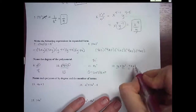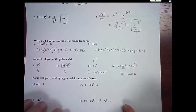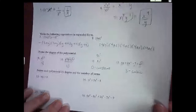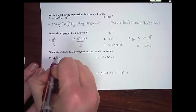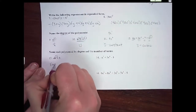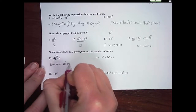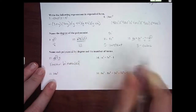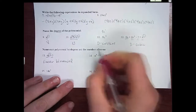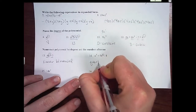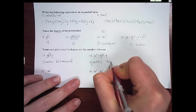And number 12, my highest degree is 3, which is cubic. Number 13, name by degree and number of terms: my highest degree is 1, so this is linear, and I have 2 terms — binomial. Number 14, my highest degree is 4, which is quartic. And I have 1, 2, 3 terms — so trinomial.